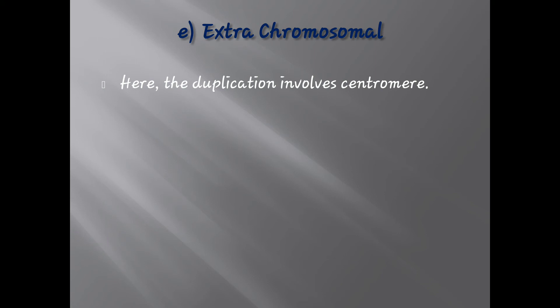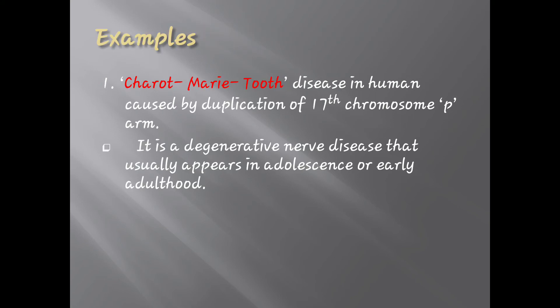The last type of duplication is extra-chromosomal, where the duplication also involves the centromere — if the duplicating segment includes the centromere, it is called extra-chromosomal. As for diseases caused by duplication, one example is Charcot-Marie-Tooth disease, found in humans and caused by duplication of the P arm of chromosome 17. It is a degenerative nerve disease that usually appears in adolescence or early adulthood.